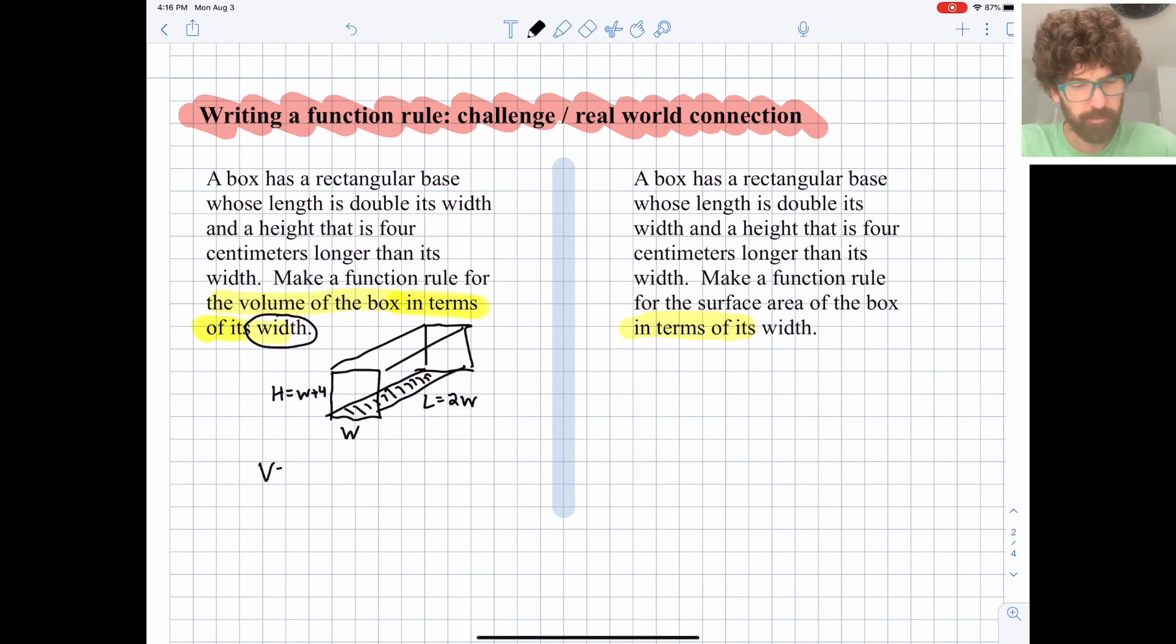Volume, we hopefully remember, is length times width times height. But now we're going to plug in some other values here. So we have our height here that we can plug in there, and we have our length here that we can plug in there. Okay, so we can just rewrite the equation. Volume is 2W for length times W times W plus 4. And we need to pop that guy into parentheses so that we do the W plus 4 before we do any of the multiplication.